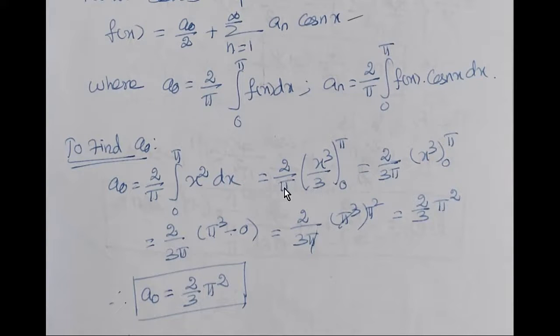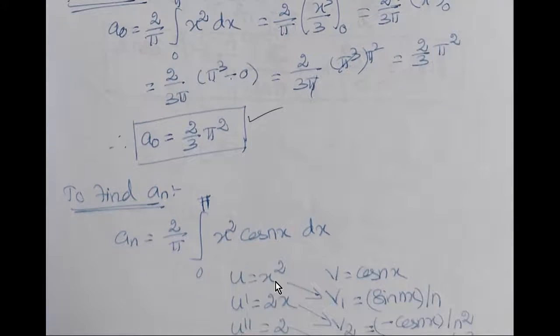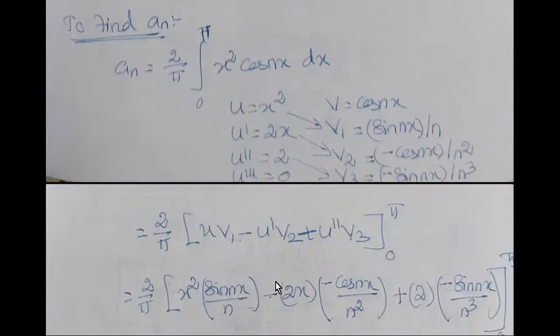So 2 by pi, x squared integral is x cube by 3 for 0 to pi. So 2 by 3 pi, x cube 0 to pi. If we use the upper limit, pi cubed minus lower limit is 0 cubed. Pi cubed minus 0 is just pi cubed. So 2 by 3 pi times pi cubed equals 2 by 3 pi squared.